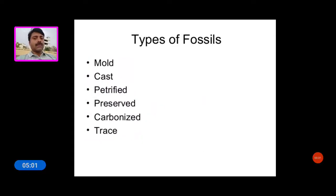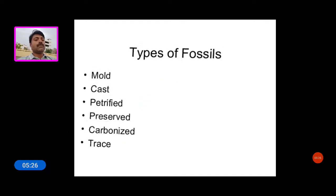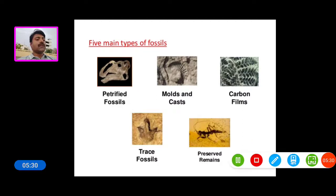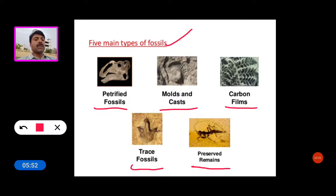Now see the types of fossils. The following types exist: mold, cast, petrified or petrification, carbonized or carbonization, and traces. These are the five main types of fossils: petrified fossil, mold and cast, carbonization, trace fossil, and preserved remains.